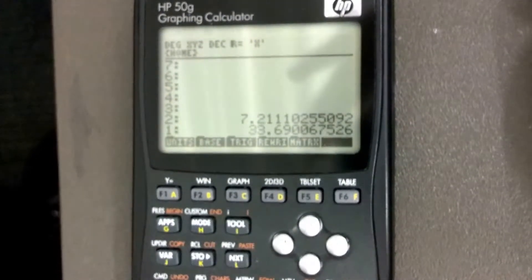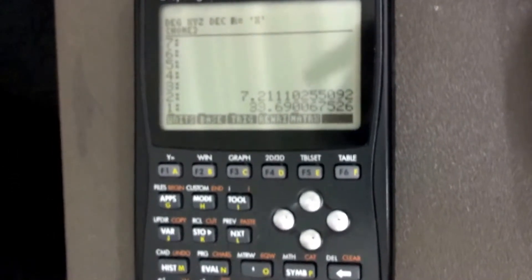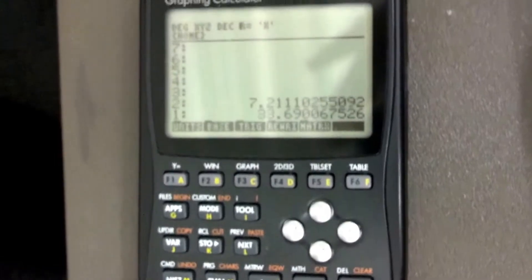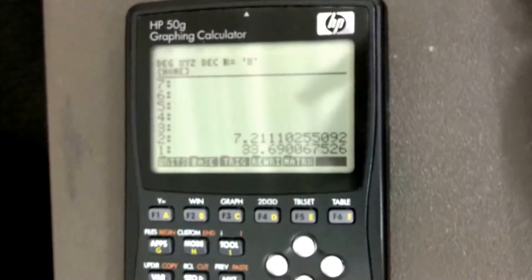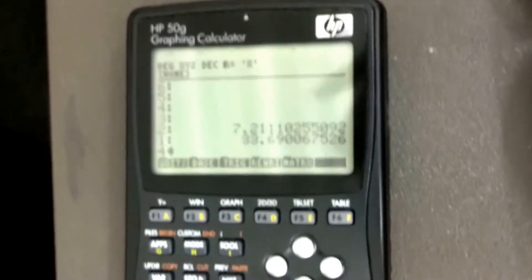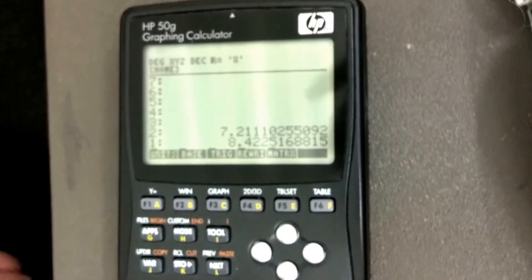So now we need to apply the fourth root, so what this means is 7.21 cis 33.69 degrees. So to apply De Moivre's theorem of taking the fourth root, I need to divide my angle by 4. So I'm going to do 4, enter, and divide. So there's my angle of 8.42 degrees.